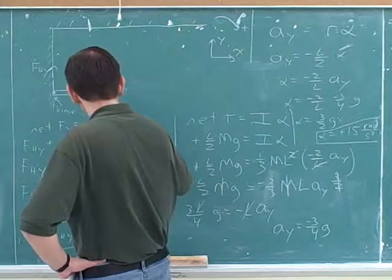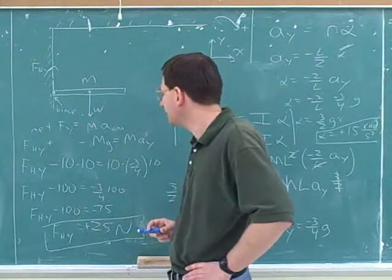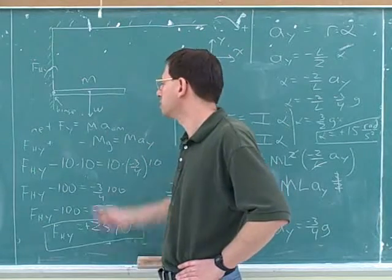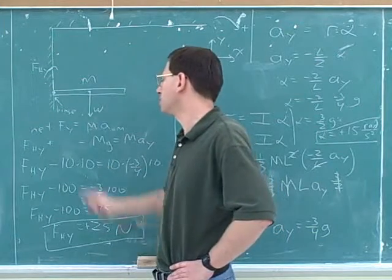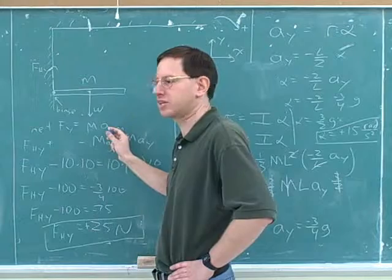The center of mass. That's good. So it turns out that when you have an extended body and different points in it are accelerating at different rates, when you're using Newton's second law for translation, you say that the net force is equal to the mass times the acceleration of the center of mass.